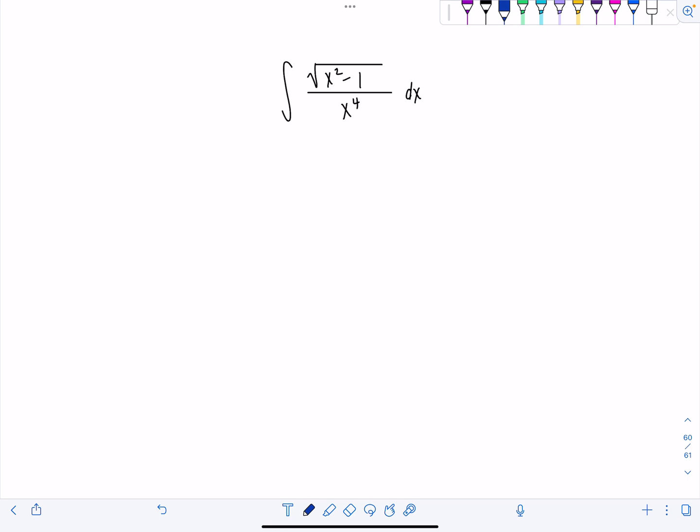We have integral of the square root of x squared minus 1 over x to the 4th dx. You probably have guessed it by now, it is trig sub time.